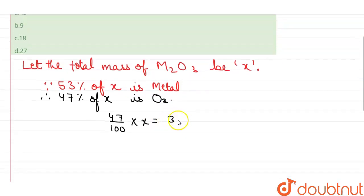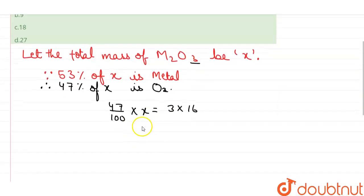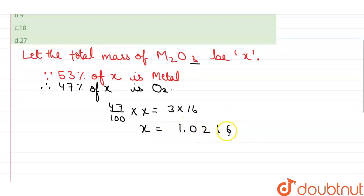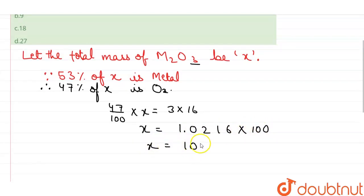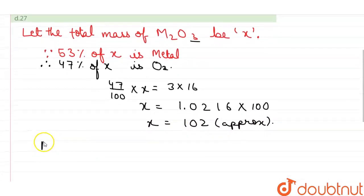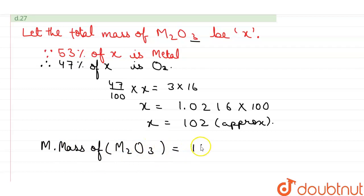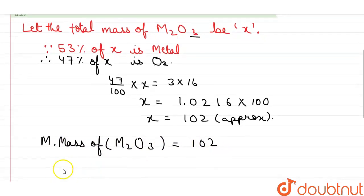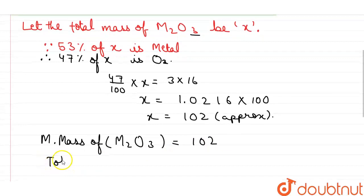This is oxygen, that is 3 into 16, because M2O3 contains three atoms of oxygen. Solving it further we get x equals 1.02 into 100, that is approximately 102.